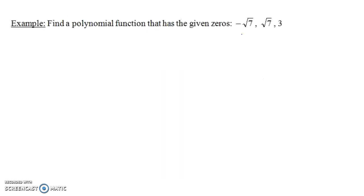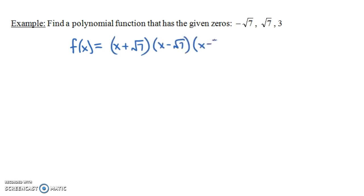This time we have some square roots. We can write f(x) = (x + √7)(x - √7)(x - 3). If we plug in -√7, the first term becomes 0; if we plug in +√7, the second term becomes 0; and if we plug in 3, the last term becomes 0. Let's multiply this out.